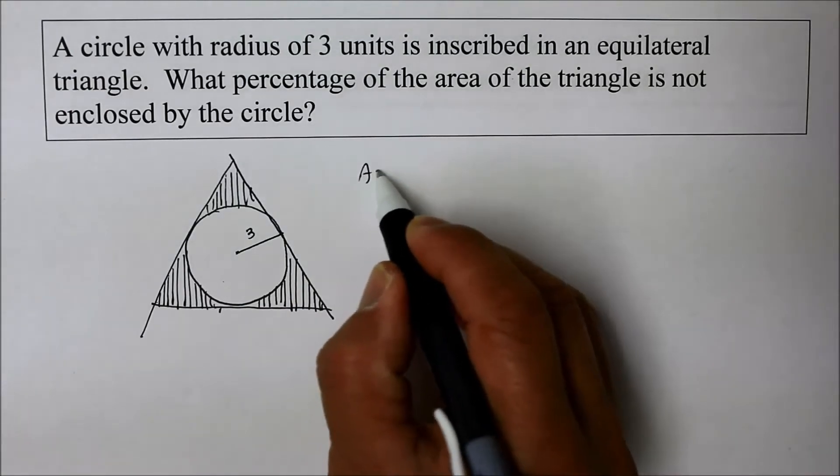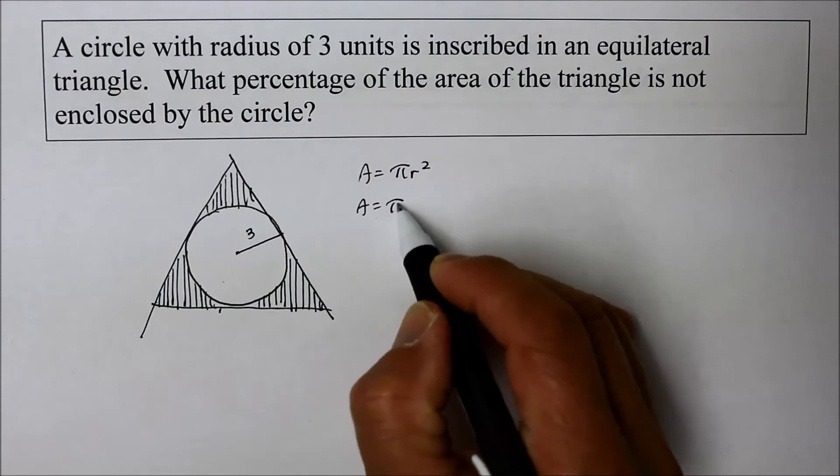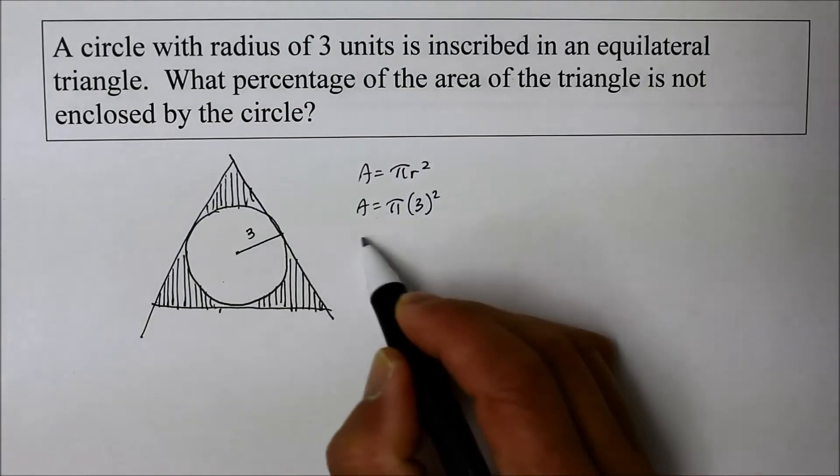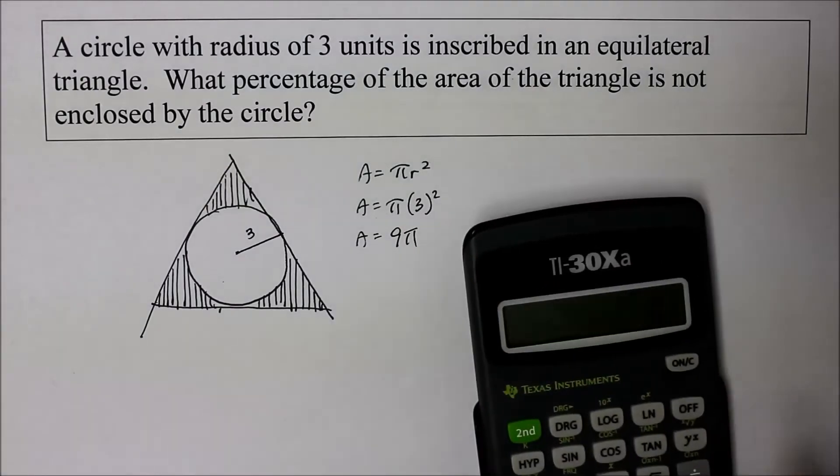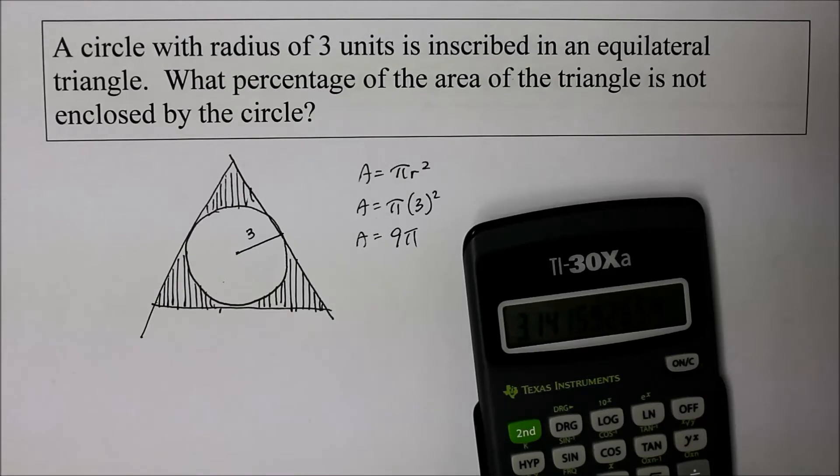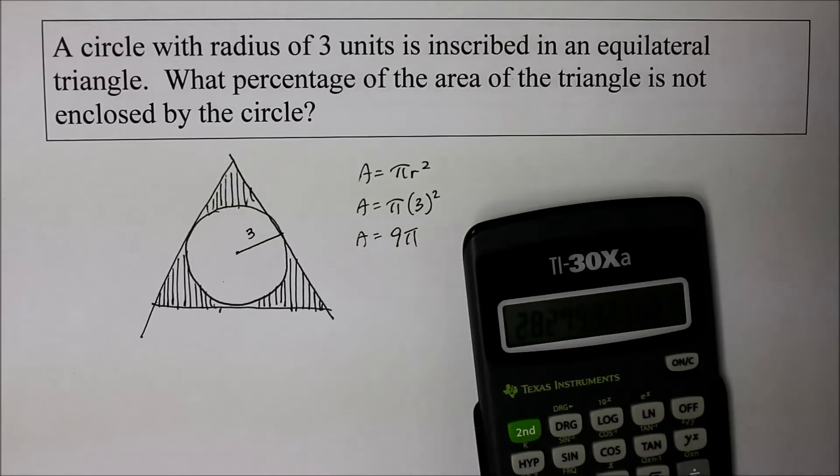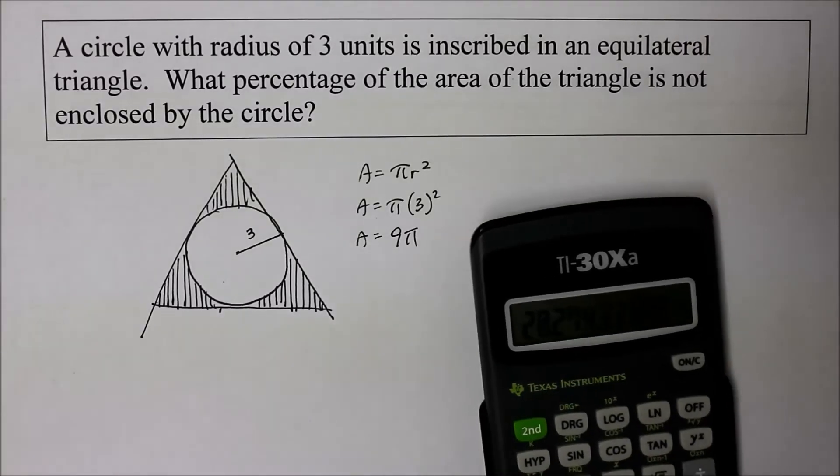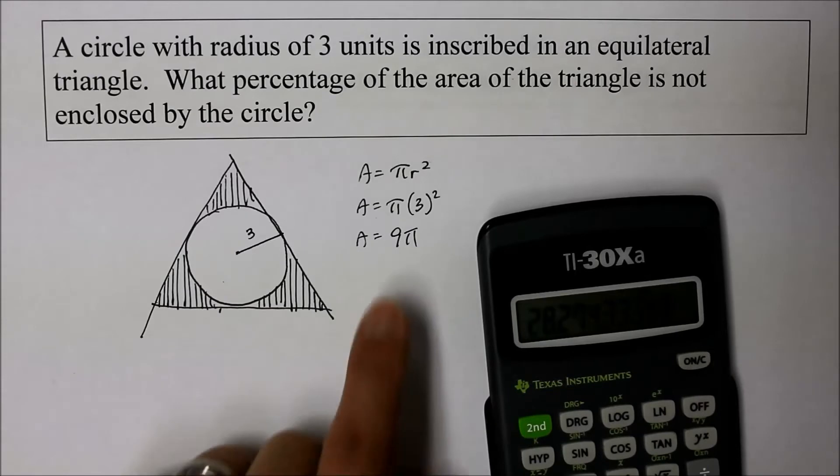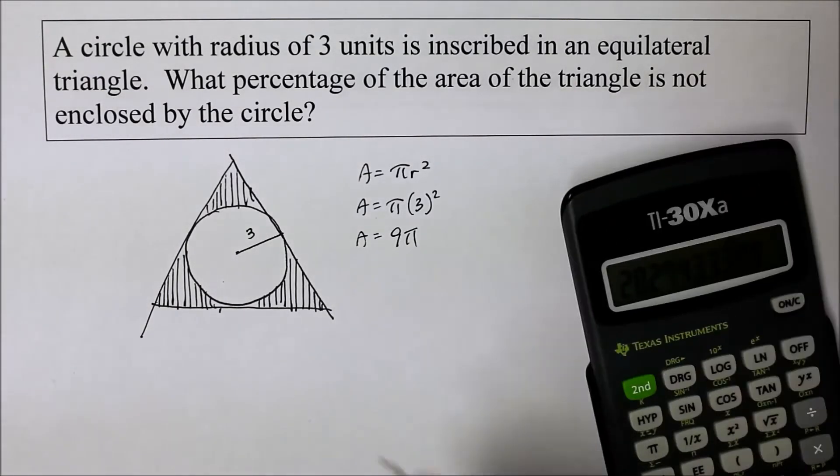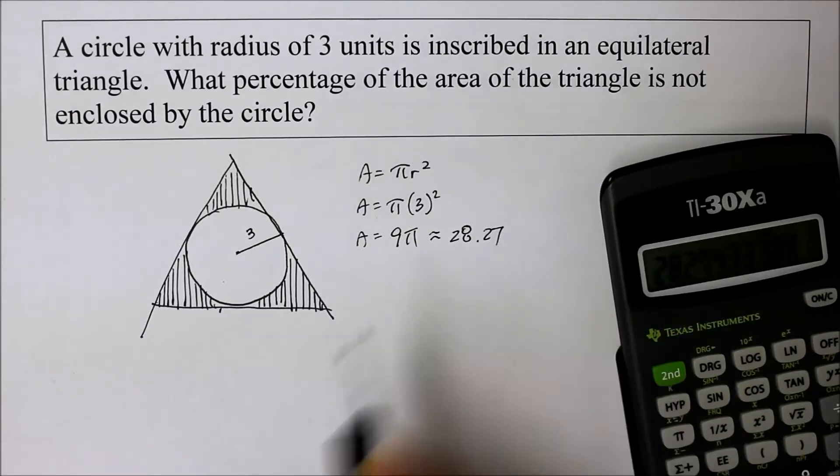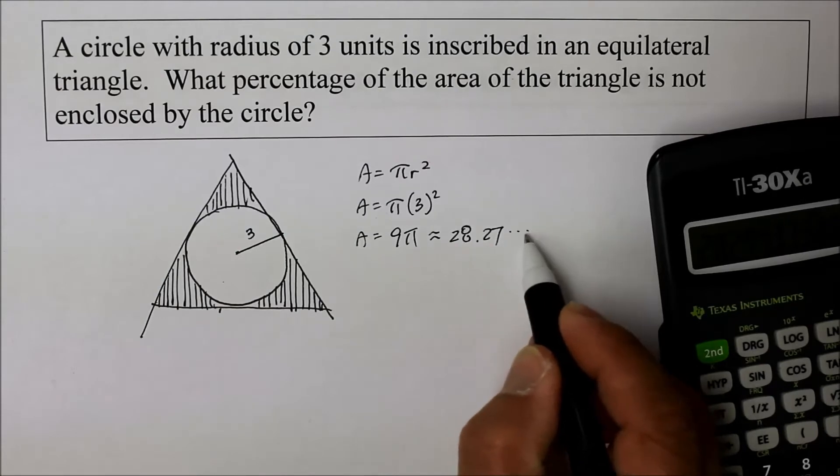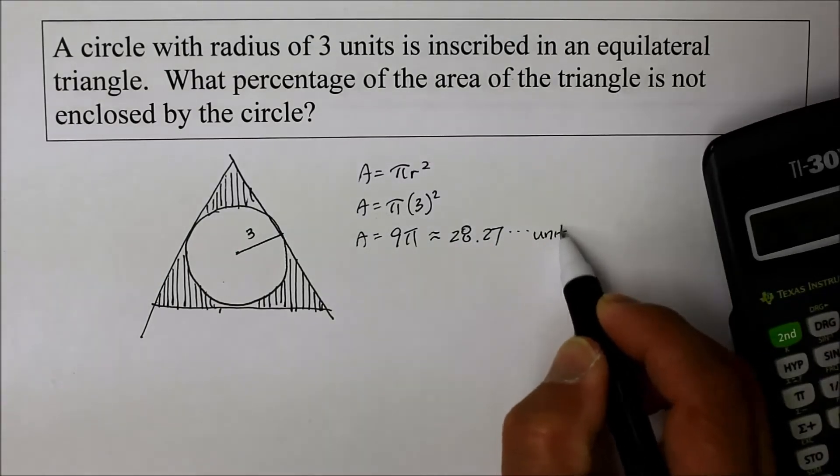So area of a circle is pi r squared. Therefore, it's pi times the radius, which is three units squared. So it is simply 9 pi. And 9 pi is approximately 9 times pi, is approximately 28.27 something units squared. Approximately 28.27, something like that. So let's just, that's just to give us an idea. 28.27433, something like that, unit squared.